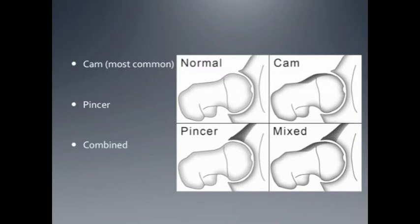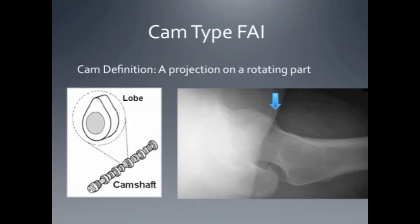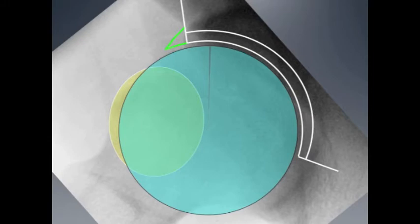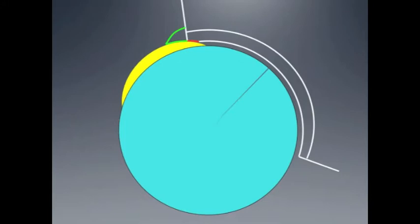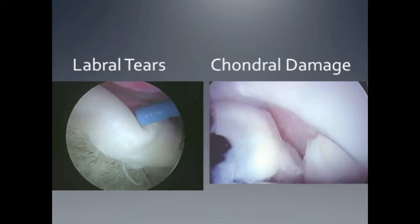The cam is the most common, and the cam gets its name from the definition of a cam, which is a projection on a rotating part. It's essentially extra bone on the hip that causes impingement. When this extra bone rotates up into the hip, it causes damage to a structure called the labrum, which is like a gasket around the hip, and to the cartilage at the top of the hip. Ultimately this can cause tears in the labrum and chondral damage.